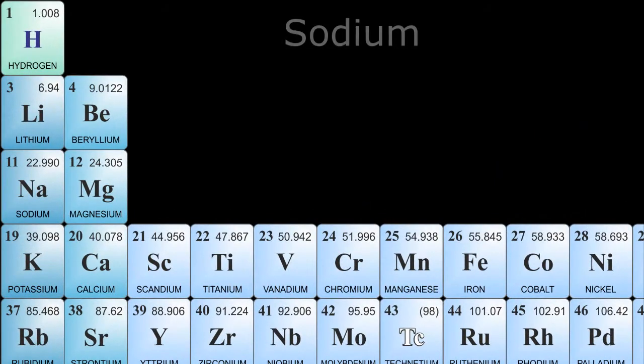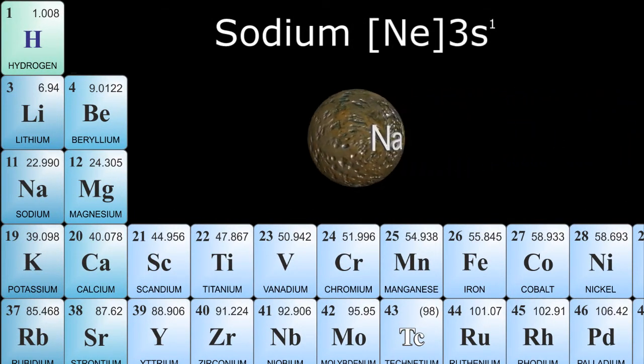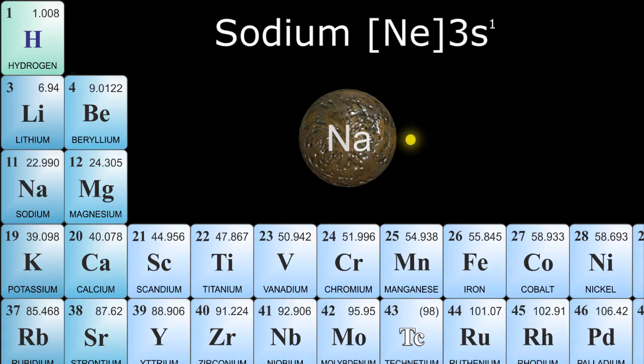Sodium, like hydrogen, has a single valence electron in its S shell, and also like hydrogen, either wants to get another electron to complete the shell, or like the true metal it is, give up its electron and completely empty the S shell.